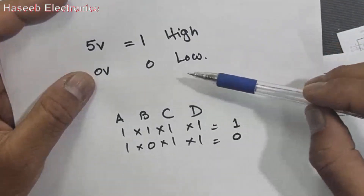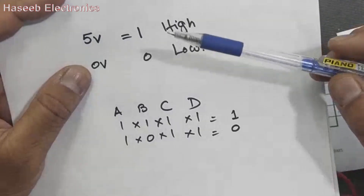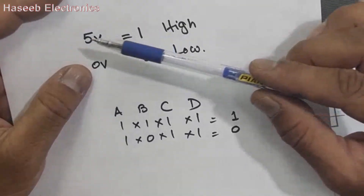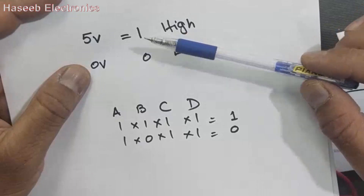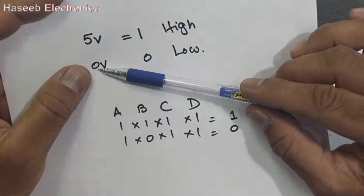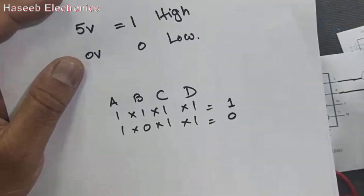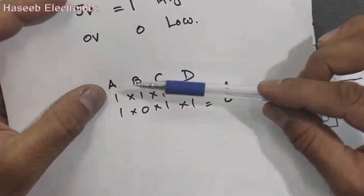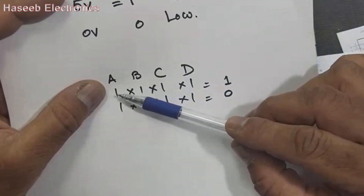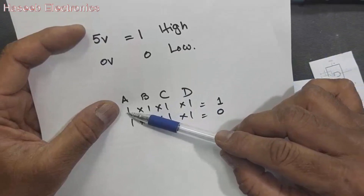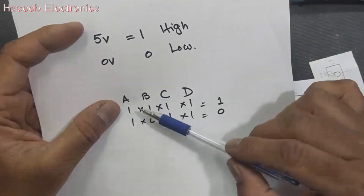And if we have 0 volts, that is called low logic. So if any pin has 5 volts, that is considered logic high. If any pin has 0 volts, that means logic low. If we have 4 inputs, that means logic 1 is not 1 volt — logic 1 is 5 volts.